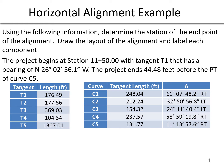The two pieces of information in the tangent table are the distances in between the curves. It isn't the tangent associated with the curve itself. Thinking about successive curves, it would be the distance from the PT of one curve to the PC of the next curve. Those are the differences between the two tables.